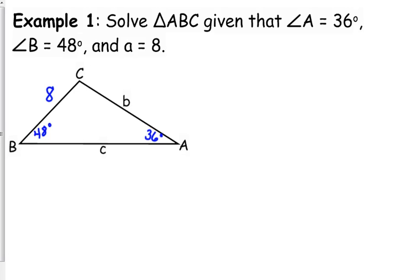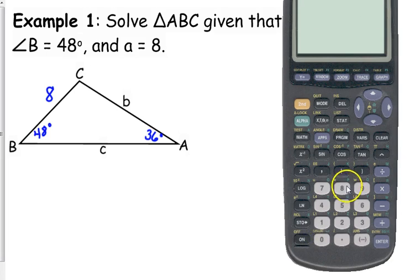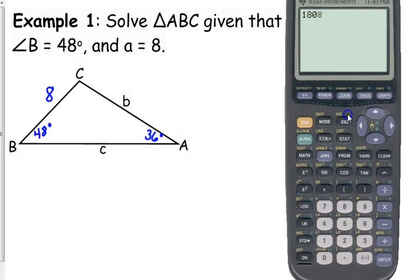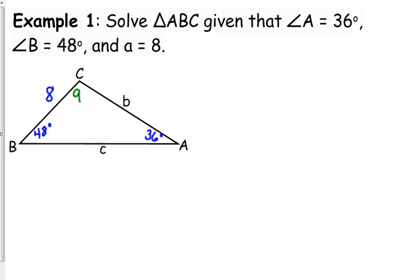Now, if I'm trying to solve for side b, side c, and angle C, what is the easiest piece to figure out? Angle C, right? Because it's the third angle in a triangle. All we have to do is subtract that from 180, and we're good to go. So 96 degrees is this angle up here, a little bit more than a right angle.